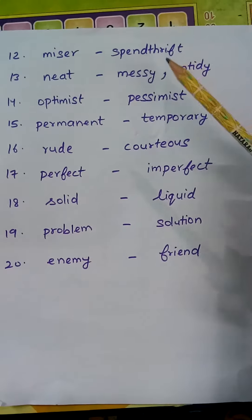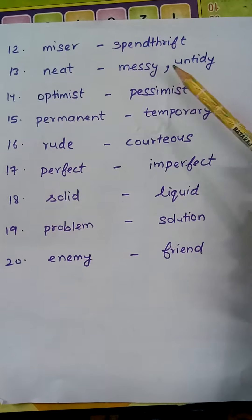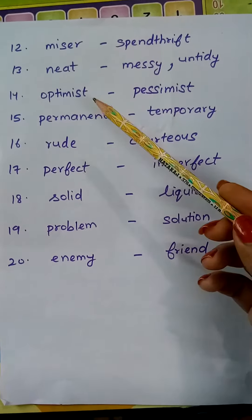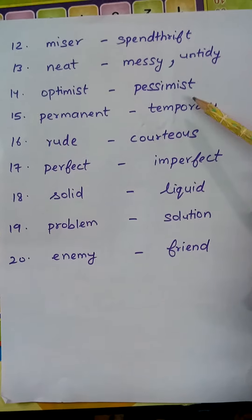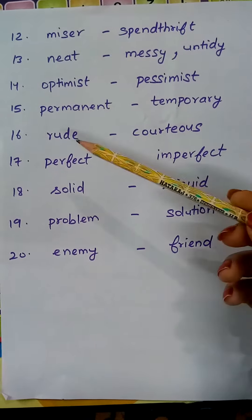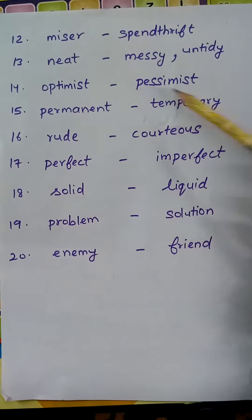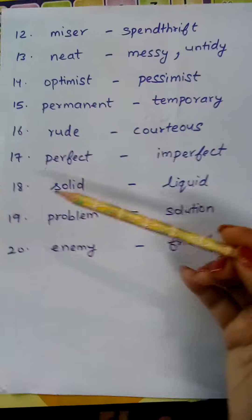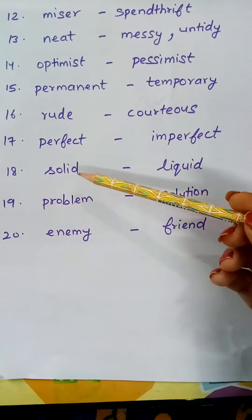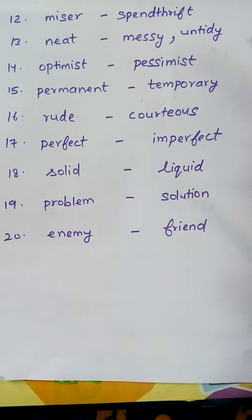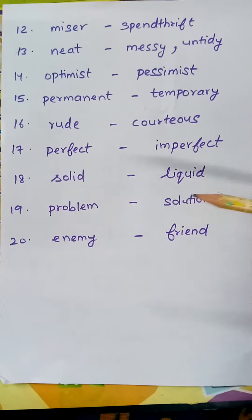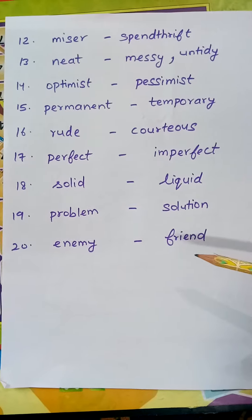Neat — messy, ganda. Untidy also. Optimist — ashavadi; pessimist — nirashavadi. Permanent — temporary. Rude — courteous, beinaram. Perfect — imperfect. Solid — liquid. Problem — solution. Enemy — friend.